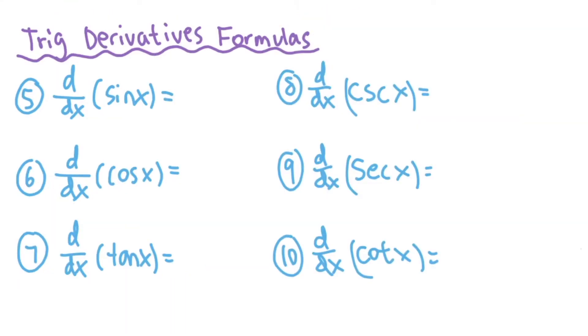So next, we have some trig derivatives formulas. So let's just go through them really quickly. And I'll tell you a pattern here. So sine of x, the derivative is just going to be cosine x. And then derivative of cosine x, it's going to be negative sine x. Let's pay attention to the negative signs here. And tangent x, the derivative is just going to be secant squared x.